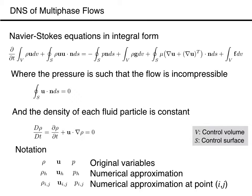Since we are sometimes dealing with a continuous flow field and sometimes with discrete approximations, we need to establish a notation that distinguishes between those two. Here we use variables without a superscript or subscript for the continuous variables, such as rho, p, and bold u, for the density, pressure, and velocity, and variables with subscripts and superscripts for the discrete approximations. A superscript denotes a time level, and a subscript denotes a discretization in space. We use the subscript h for an unspecified spatial discretization, and i, j for variables discretized on regular structured two-dimensional grids.